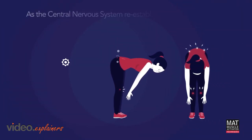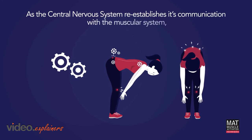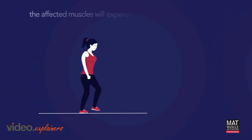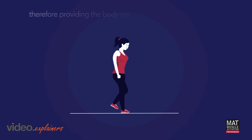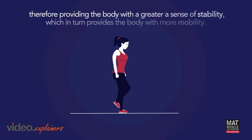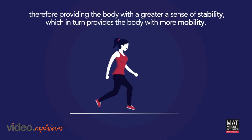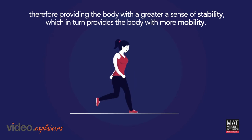As the central nervous system re-establishes its communication with the muscular system, the affected muscles will experience fewer protective measures, therefore providing the body with a greater sense of stability, which in turn provides the body with more mobility.